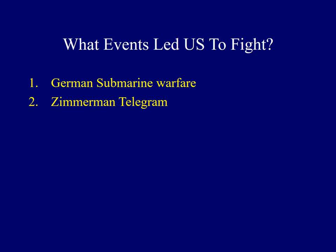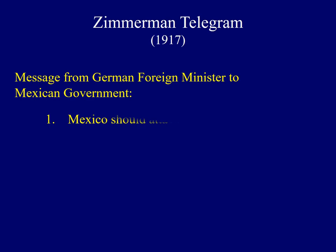The second factor that led to American involvement in the war was the Zimmerman telegram — a message from German foreign minister Alfred Zimmerman to the Mexican government. It offered Mexico a plan: first, Mexico would attack the United States; second, Germany would become involved and help Mexico defeat the Americans; and third, Mexico would be able to recapture land previously lost to the United States if they undertook this proposal.